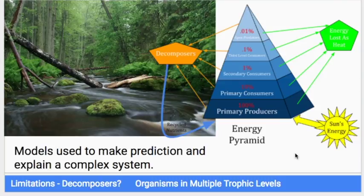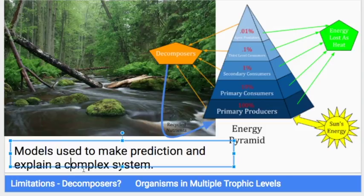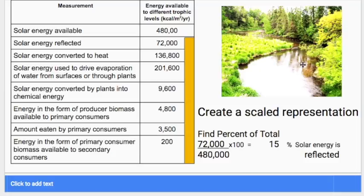In class this week, we are going to be analyzing some data, putting it into a model representation in order to make some predictions and help us explain a complex system that is energy flow. This data comes from this forest called Hubbard Brook, and it's in New Hampshire. Some scientists went into this forest and they made a whole bunch of measurements. The way they made their measurements is they calculated how much total energy is hitting that square meter on average for an entire year.